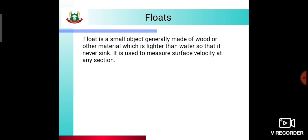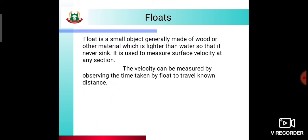The next device is floats. A float is a small object generally made of wood or other materials which is lighter than water, so that it never sinks. It is used to measure surface velocity at any section. The velocity can be measured by observing the time taken by the float to travel a known distance.